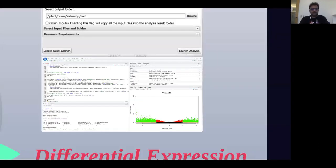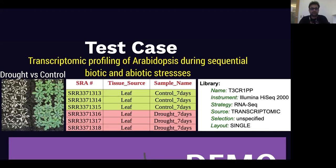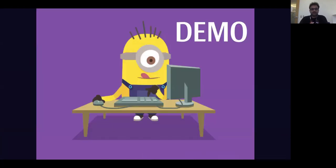Now I'll introduce the test data for today's webinar. We'll be looking at transcriptomic profiling of Arabidopsis during sequential biotic and abiotic stresses. We have three samples of control and three of drought condition samples for seven days. The library prep has been performed and sequenced on an Illumina HiSeq. The reads are single-end reads used for the library preparation. Let's move on to the demo now.